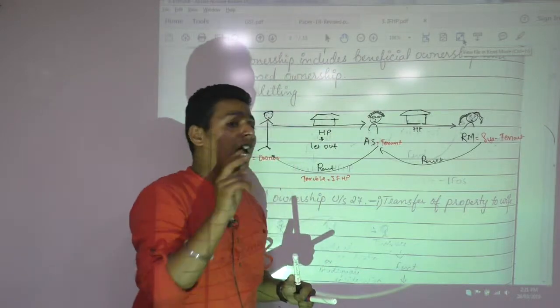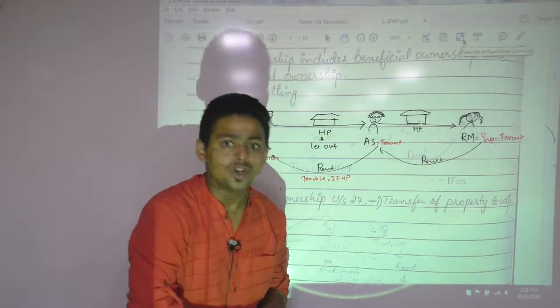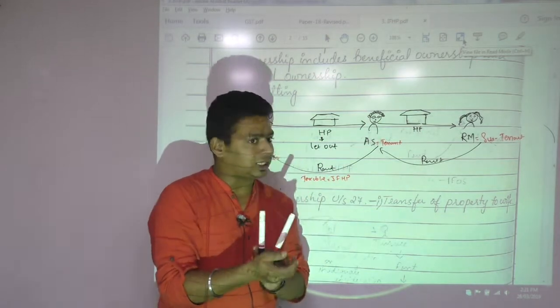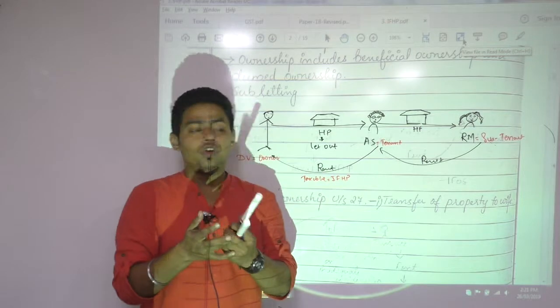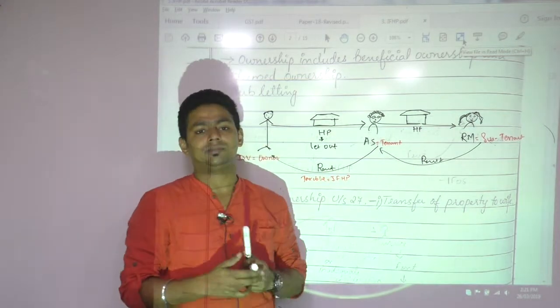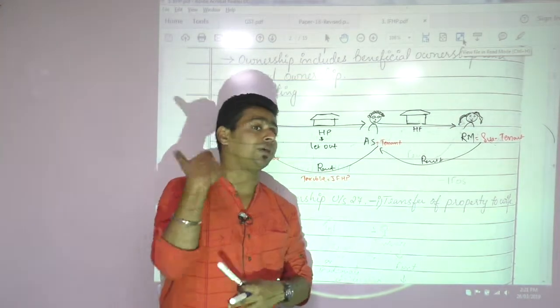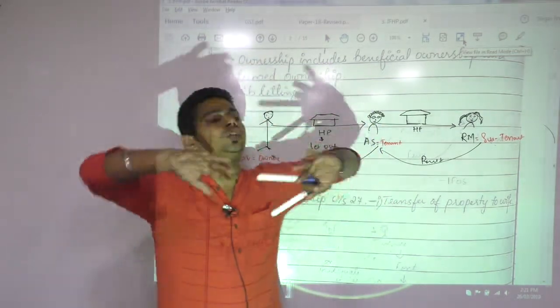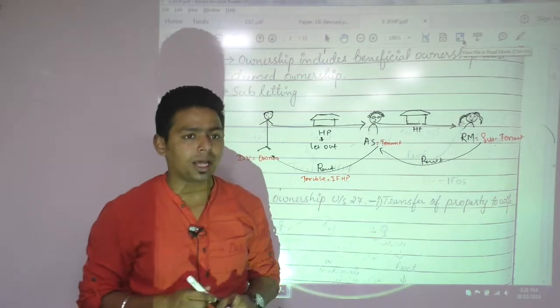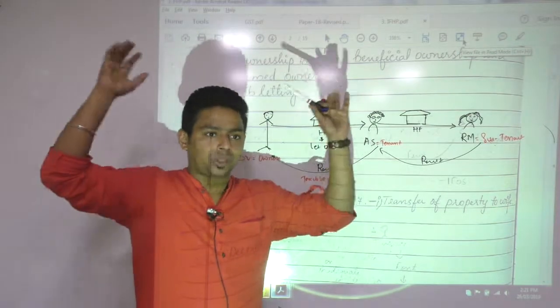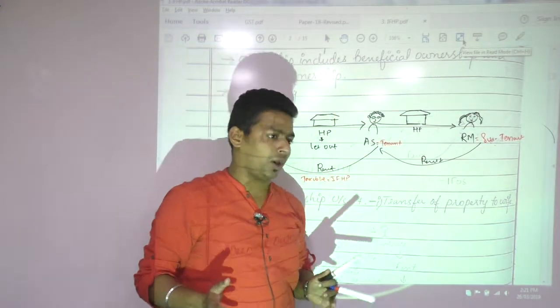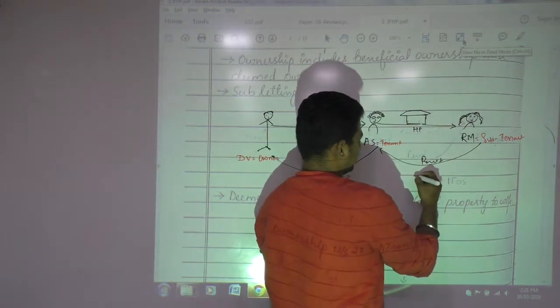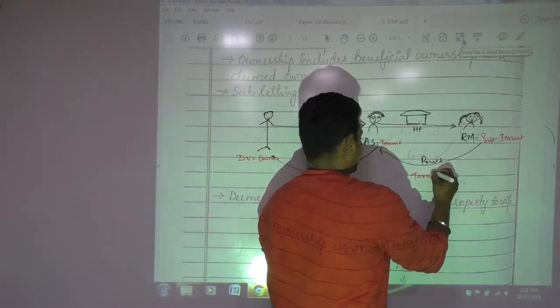This is the second IFOS point you are learning here. You are not learning only house property - you will be learning Chapter 6A, sections, IFOS, tax evasion mechanisms, tax avoidance mechanisms. You are going to learn so many things: exempt income and other chapters. This particular income is taxable under IFOS.